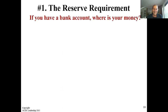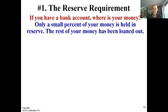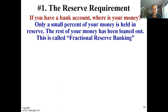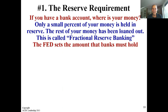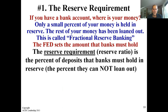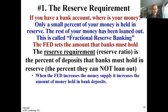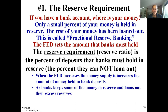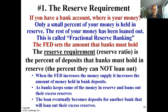Number one: the reserve requirement. If you have a bank account, where is your money? Only a small percent of your money is held in reserve. The rest has been loaned out by the bank to other people. This is called the fractional reserve banking system. The Fed sets the amount banks must hold. The reserve requirement or reserve ratio is the percent of deposits that banks must hold in reserve — the percent they cannot loan out.